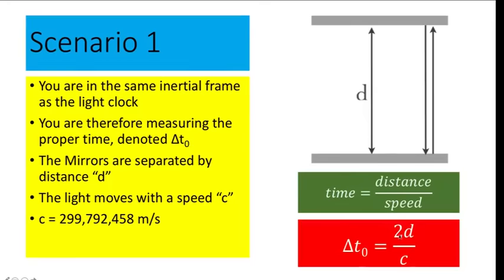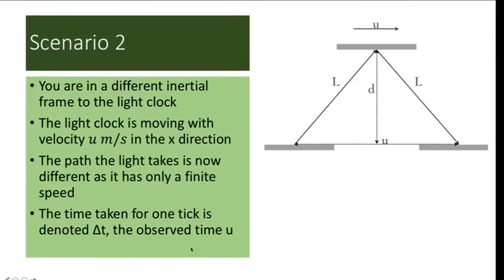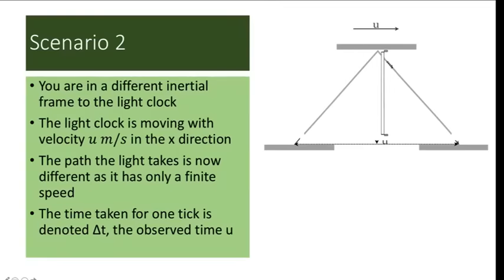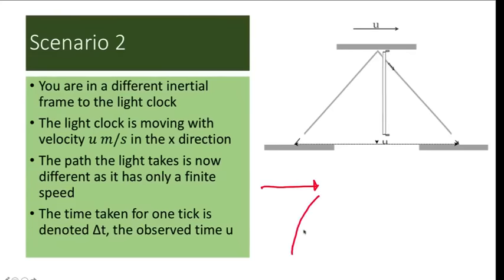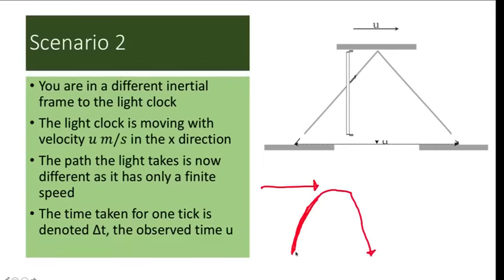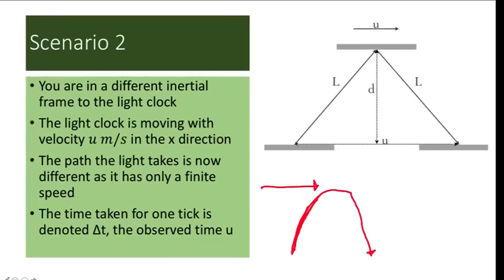In the second scenario, imagine a spaceship moving horizontally where the observer is outside the inertial frame — meaning the clock is outside the observer's frame of reference. The light clock is moving with a velocity of u meters per second in the x direction. A good analogy is a wind blowing sideways while you throw a piece of paper upward — the paper will be pushed sideways and will not fall at the same location where it was thrown. From the vantage point of someone outside that frame of reference, the light travels diagonally, and the speed of the object moving sideways is u meters per second.